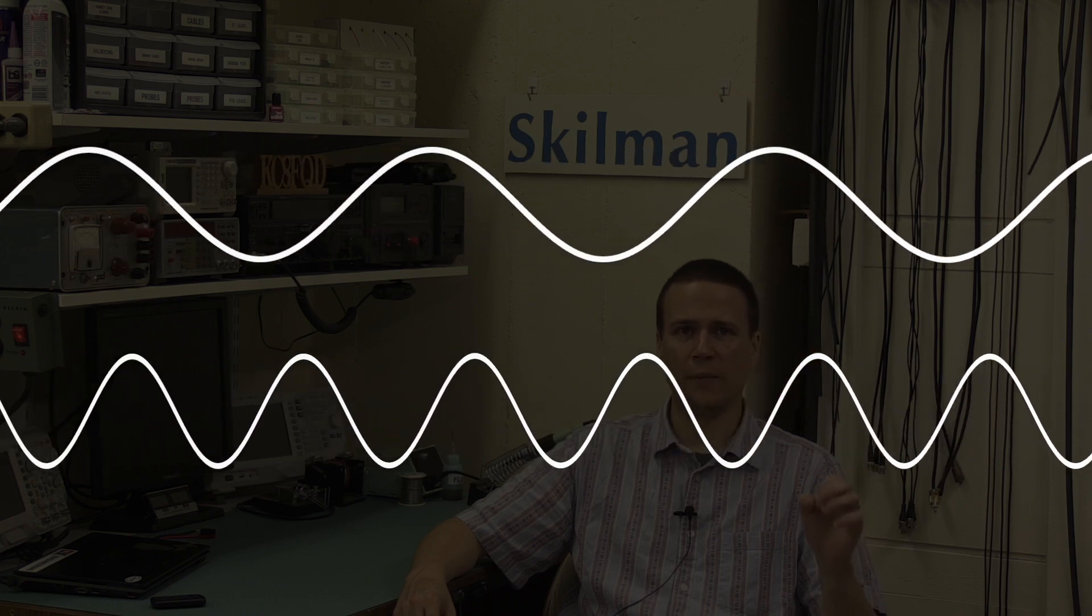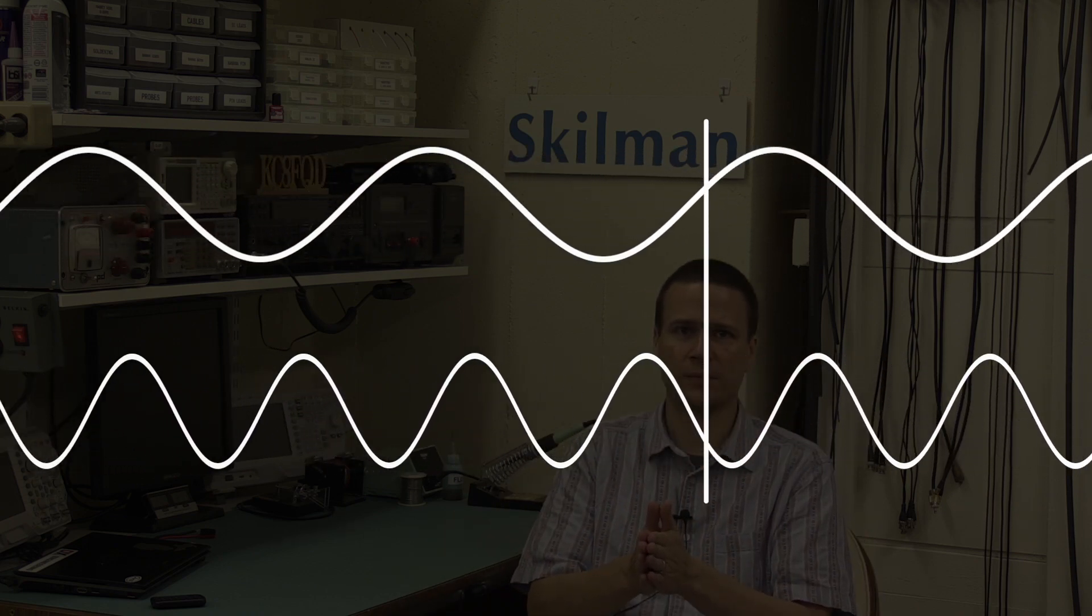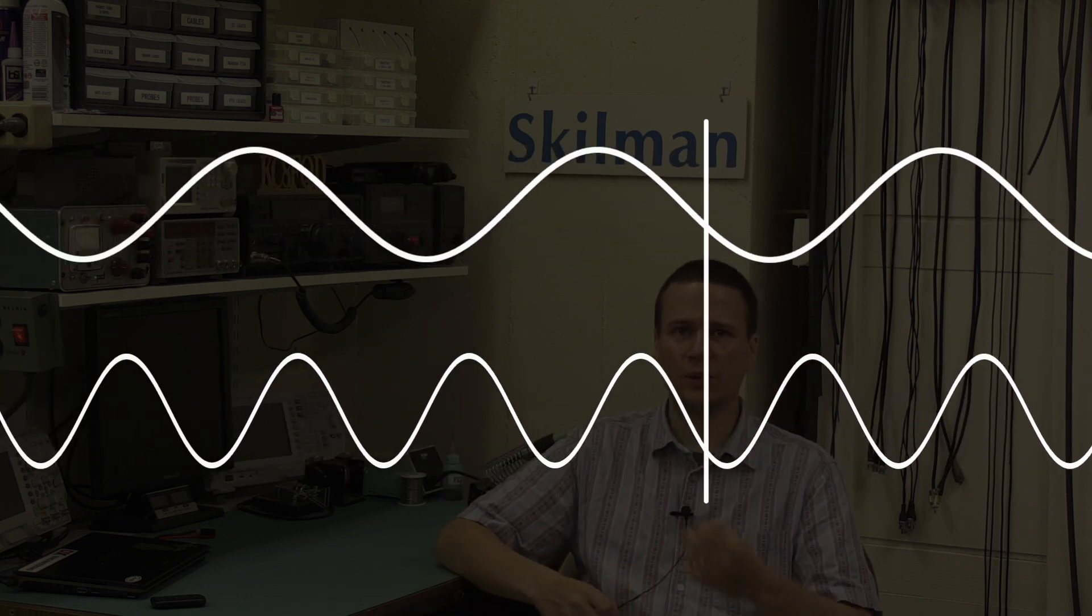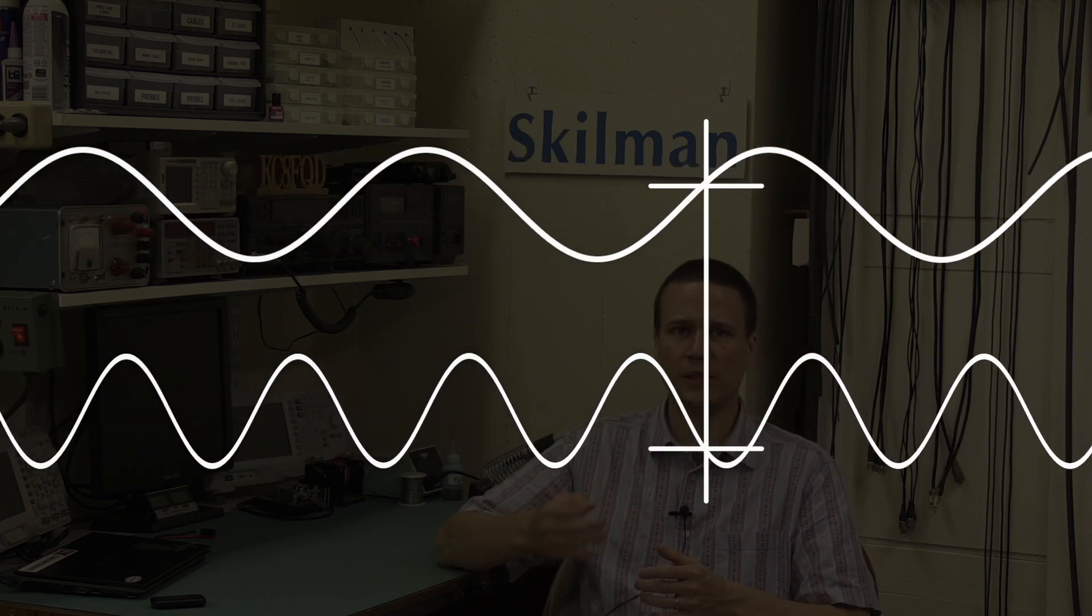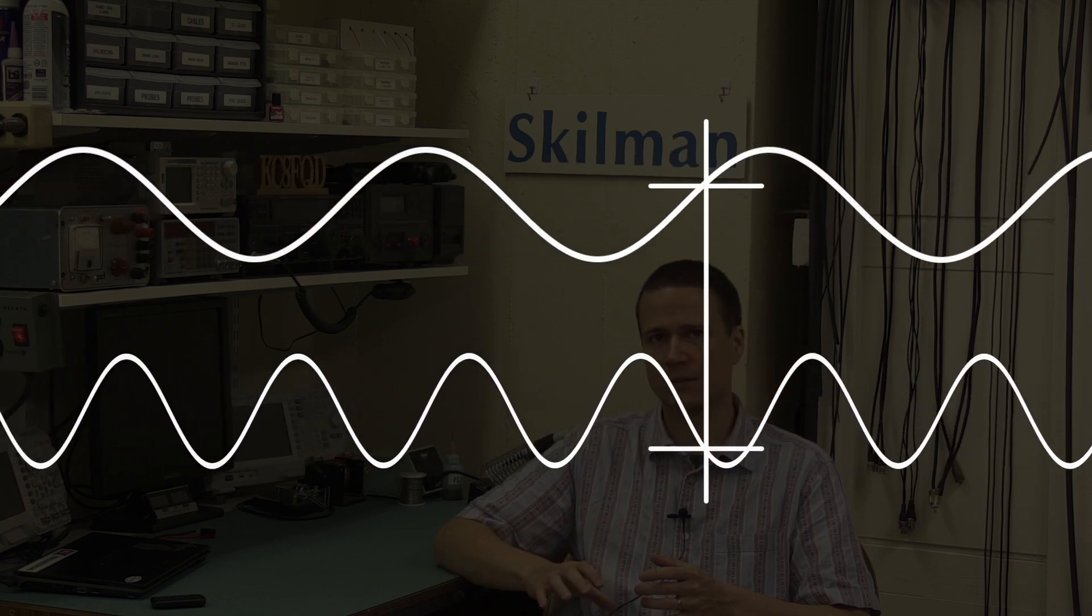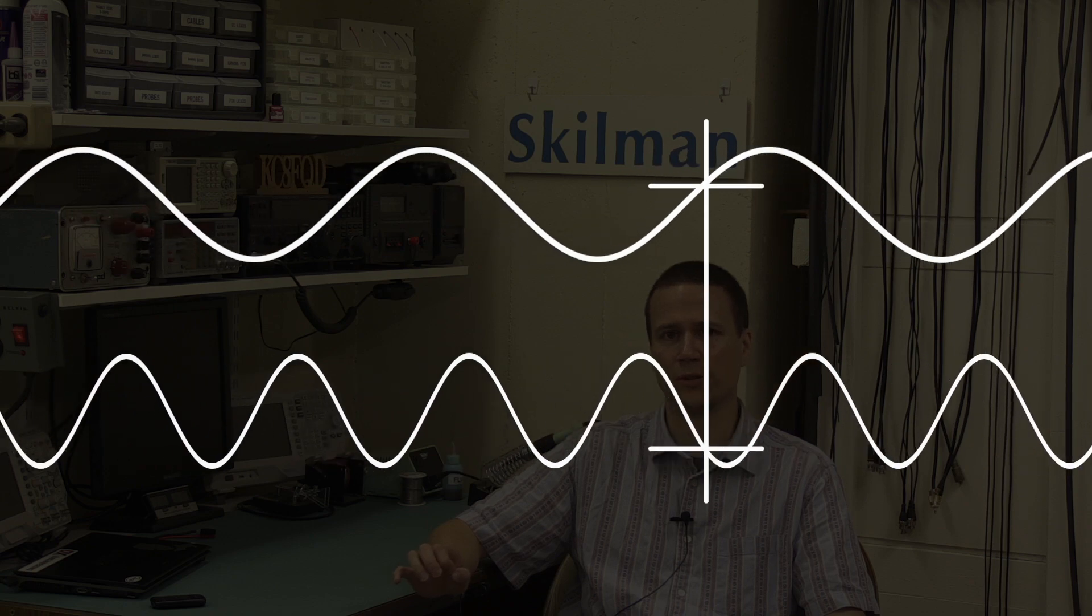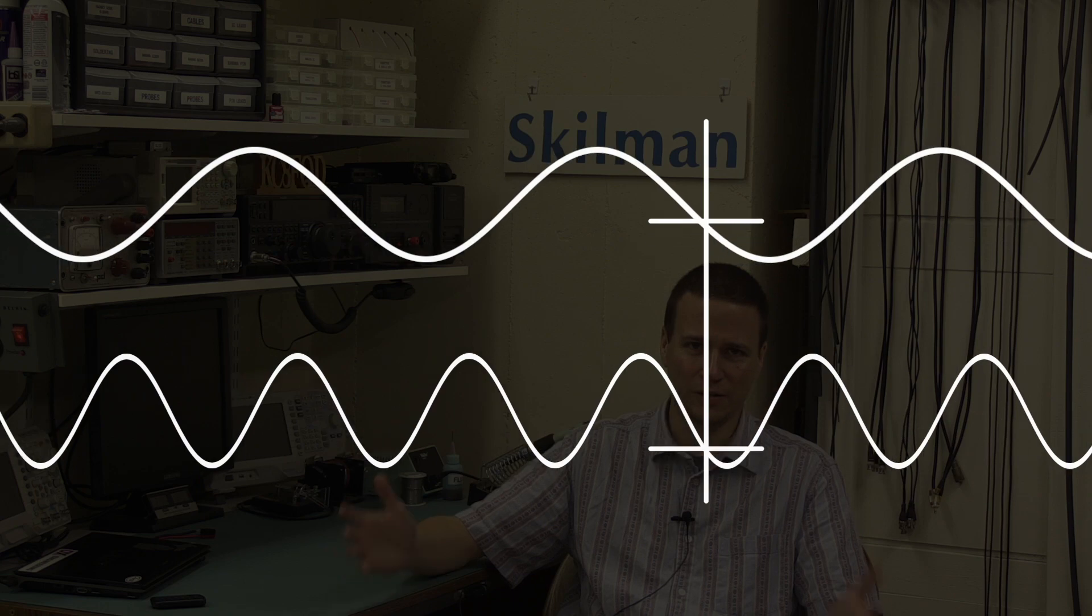Suppose we imagine how the wave would seem to a measuring device at a fixed point in space. As the wave moves by, the device measures an increasing and decreasing magnitude. Because the speed of the wave is constant, and the wavelength is constant, this cycle of magnitude values measured by the device repeats at regular intervals. How frequent these intervals are, we call the frequency.